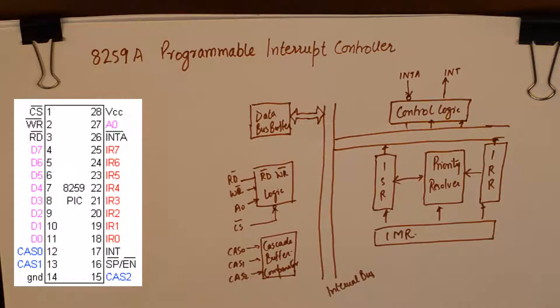It is going to increase the number of external hardware interrupts by 8. So this programmable interrupt controller 8259 IC, if it is interfaced with 8085, will increase the number of hardware interrupts by 8. So we will get 8 additional interrupts.